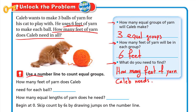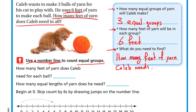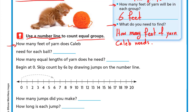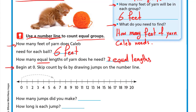Okay, so here we will use a number line to count equal groups. Let's see how. How many feet of yarn does Caleb need for each ball? For each ball, six feet. How many equal lengths of yarn does he need? Each ball needs six feet, he needs three balls, so three lengths — each length is six feet. So we'll need three equal lengths. Here's how we do it: begin at zero, skip count by sixes by drawing jumps on the number line. We begin at zero, the first jump is six.